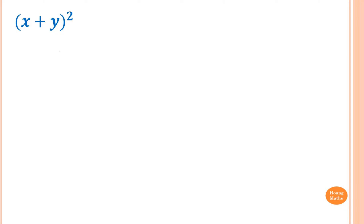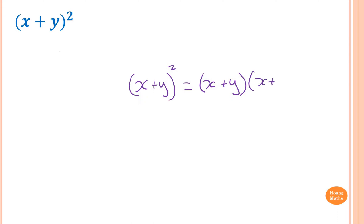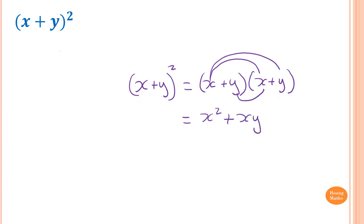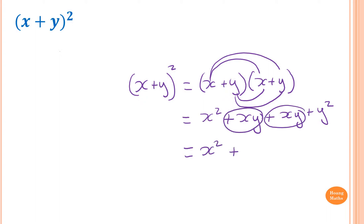To expand (x+y)², this is the same as (x+y) times (x+y). So x times x is x², x times y is xy, y times x is xy, and y times y is y². Now we collect like terms: x², then xy plus another xy gives 2xy.